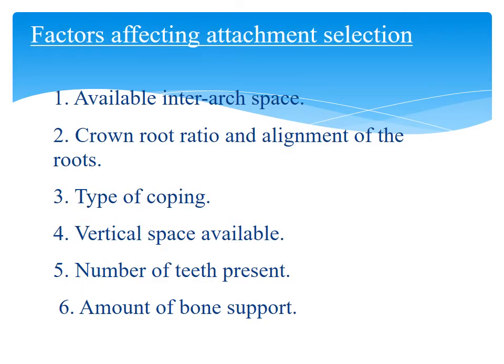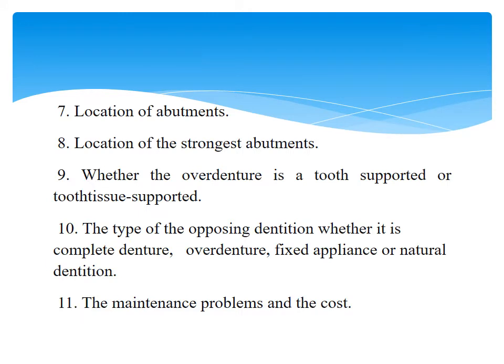The factors affecting attachment selection are: available inter-arch space; crown-root ratio and alignment of roots; type of coping; vertical space available; number of teeth present; amount of bone support; location of abutments; location of the strongest abutments; whether the overdenture is tooth-supported or tooth-tissue-supported; the type of opposing dentition — whether it is a complete denture, overdenture, fixed appliance, or natural dentition; and maintenance problems and cost.